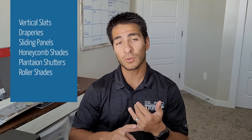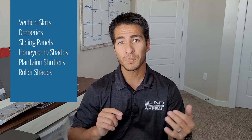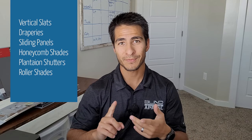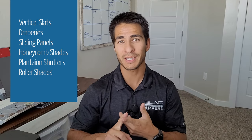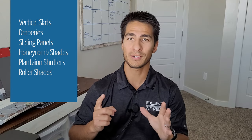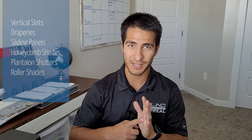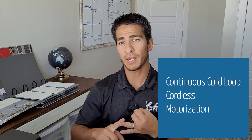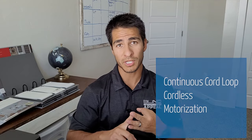There are six products we're going to primarily discuss here: vertical slats, draperies, sliding panels, honeycomb shades, plantation shutters, and roller shades. Four of the six products come with the same operating systems — there's the continuous cord loop, cordless, and motorization.